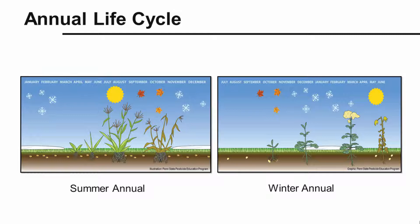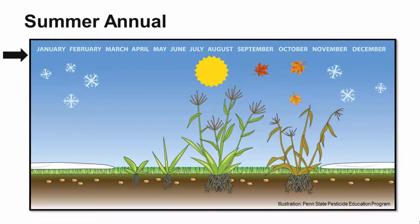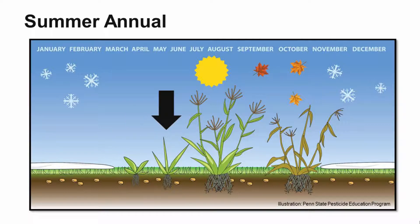The annual life cycle is broken into summer annuals and winter annuals. As 'annual' implies, the plant is only going to live one year. Starting with the summer annual — you can see across the top we have the months of the year going from January through December. In the spring, the summer annual will germinate from seed. You can see the nice supply of weed seeds in the soil. It will germinate, keep growing, and then mature, shooting up a seed stalk to produce seeds.